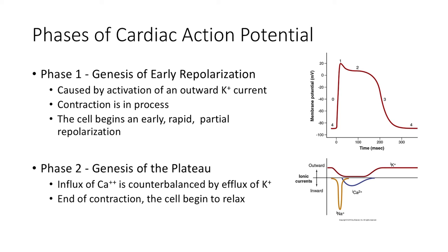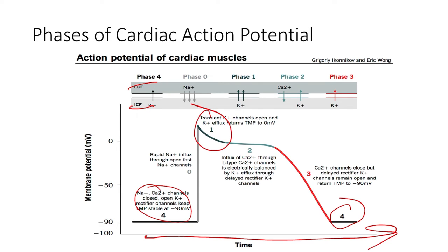Phase one is the genesis of early repolarization, caused by activation of the outward potassium current. Sodium typically influxes into the cell; potassium effluxes out of the cell. The contraction is still in process. The cell begins early rapid partial repolarization because the sodium channels open faster than the potassium channels — they opened first. The potassium channels then open and we start seeing a slight efflux of potassium, which causes that little dip. The potassium channels open and the efflux of potassium begins.